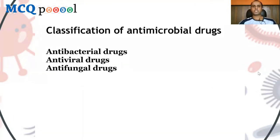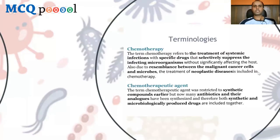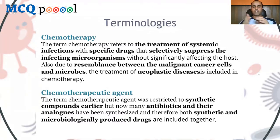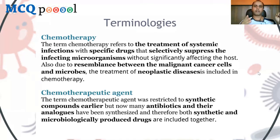Antimicrobial drugs can be classified as antibacterial, antiviral, and antifungal drugs. Key terminology: chemotherapy refers to the treatment of systemic infections using specific drugs that selectively suppress the infecting microorganisms without significantly affecting the host. A chemotherapeutic agent is the agent used for chemotherapy — it could be an antibiotic or a drug used in neoplastic diseases, since cancer cells replicate rapidly like microbes.